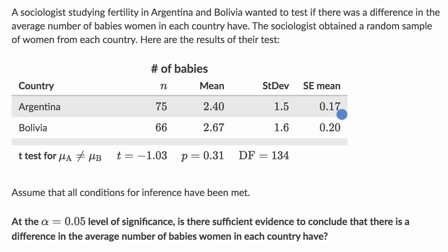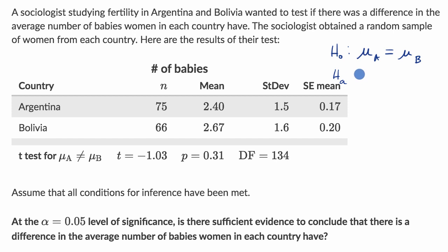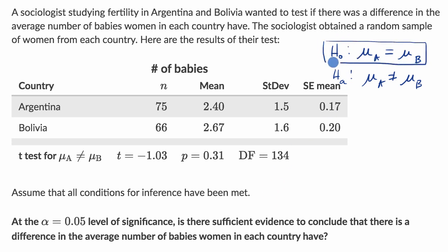This is classic hypothesis testing, where your null hypothesis is that your means are the same — the mean in Argentina is equal to the mean in Bolivia. Then your alternative hypothesis is that your means are different. What you do is assume the null hypothesis and ask: what is the probability that we would have gotten means this far apart? That's what our p-value tells us.